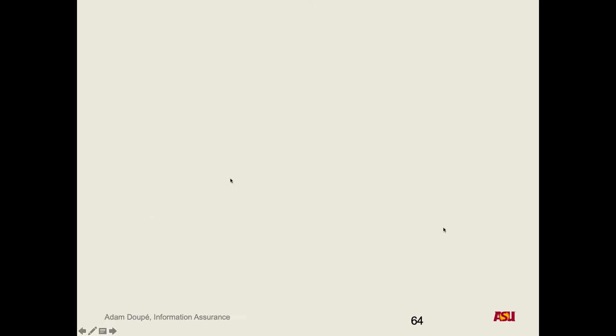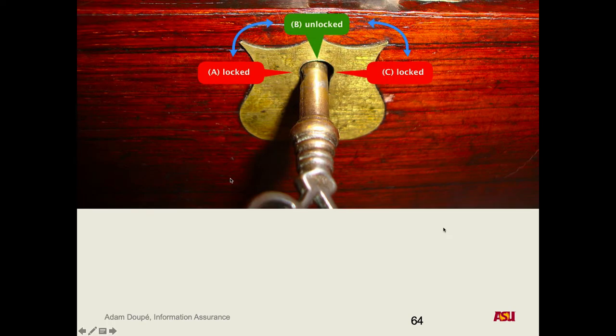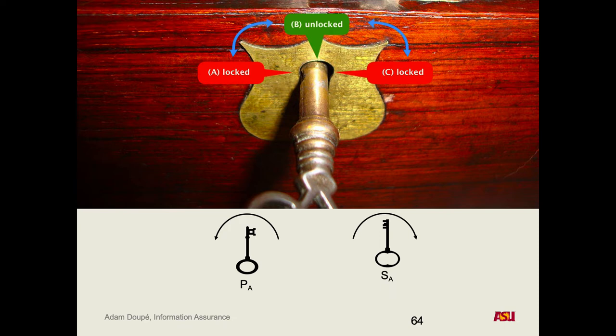Now, on to symmetric key crypto. So what were we talking about on Tuesday? What was important about this box? Two keys. What's the difference between the two keys? One only turns the key to the right, and one only turns the key to the left. What we name them doesn't quite matter here, but if we are able to create keys with these properties, we talked about how people can leave me a message in my box, and I know that it hasn't been tampered with. You can also verify that a message is from me.